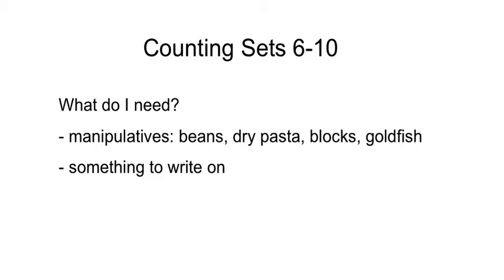What do you need? You may need manipulatives. You can use beans, dried pasta, blocks, goldfish, a toy that your child has ten of — any object, as long as you have ten of them for your child to be able to count up to that number. You also will need something to write on. If you have post-its, flashcards, any kind of paper that you can write numbers six through ten on for your child to be able to look at.